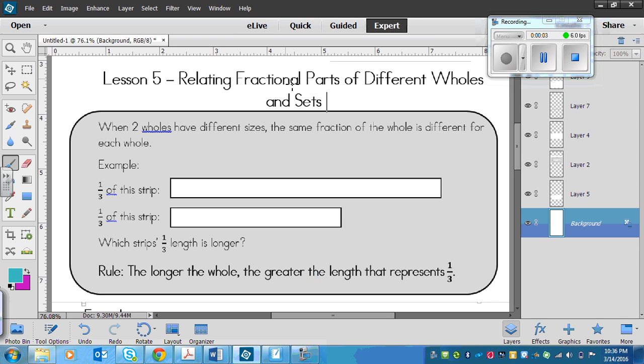This is a lesson on relating fractional parts of different wholes and sets. What that means is you're going to look at different sets and the fractions to them and then compare them. I don't know if that made any more sense, but here's some of what the sheet says. It says when two wholes have different sizes, the same fraction of the whole is different for each whole. That probably didn't make a whole lot of sense either, but here's an example, and this will make sense.